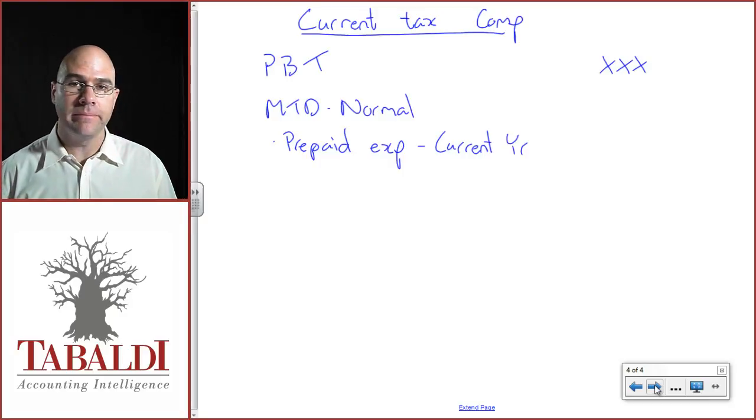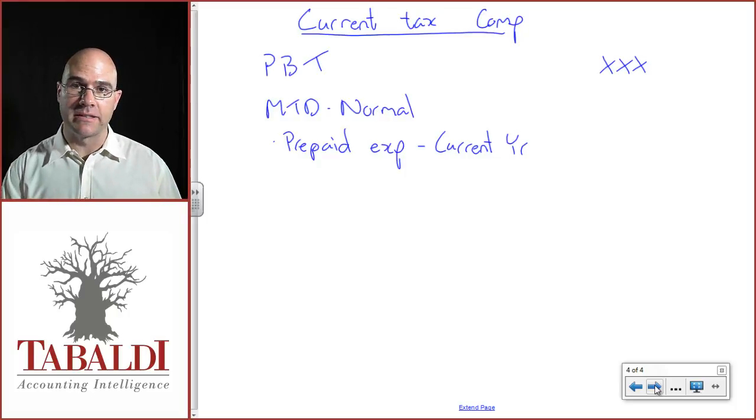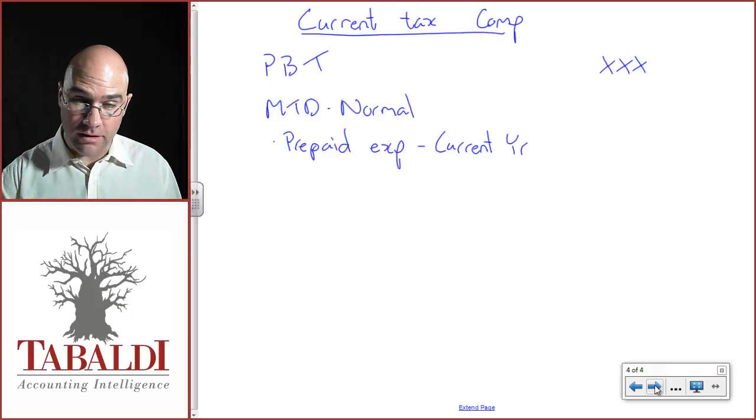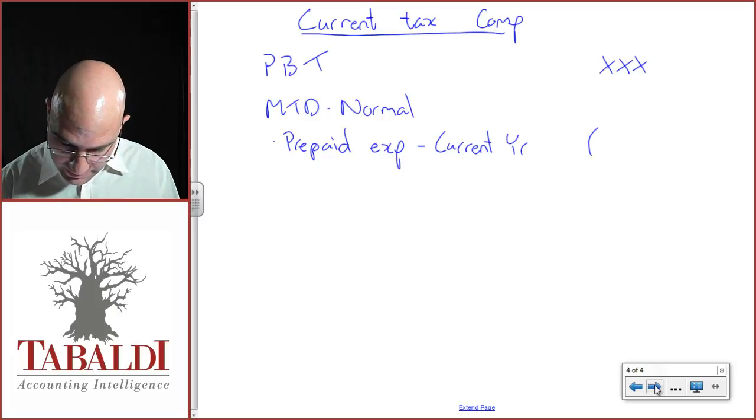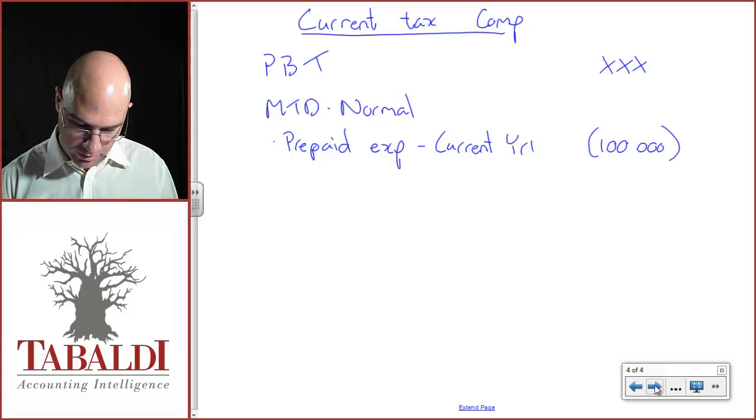So the current year, the profit and loss effect is zero. There was no expense. It went debit prepaid expense, credit bank. But the tax authority says, well, you paid 100,000, therefore you get 100,000 deduction. So that's the tax effect, if you want to call it that. That's the tax deduction.